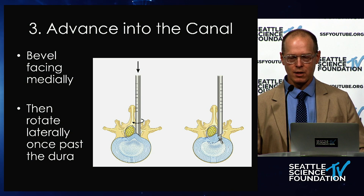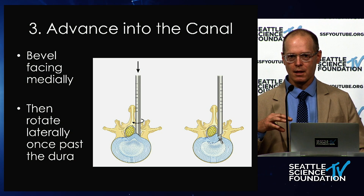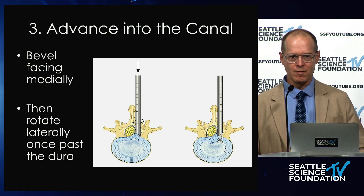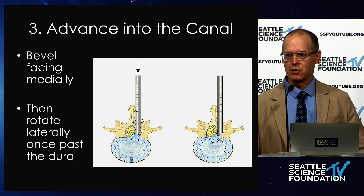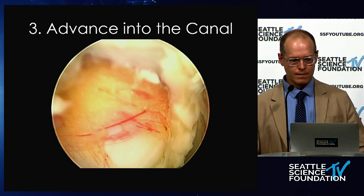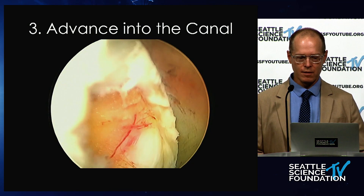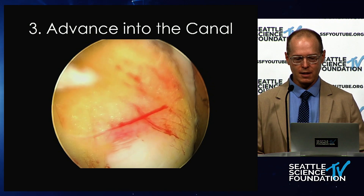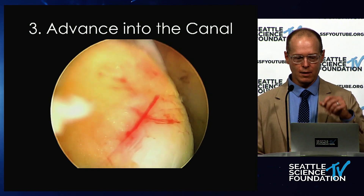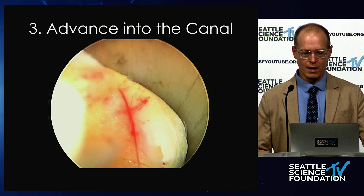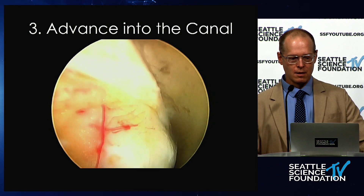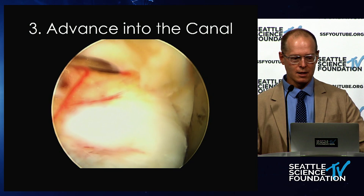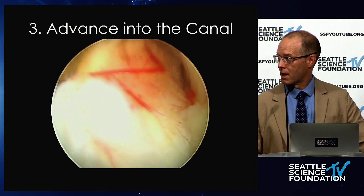As long as you're in a good lateral position, that will help you get into a good position when you enter the canal. Once you get into the canal, you're going to rotate the bevel to face laterally. What that does is the tip of the tubular retractor actually acts as a retractor to protect the traversing nerve root. Here you can see the ligamentum flavum around the edges of the video, and I'm gradually watching the tip of that working port advancing into the canal. This is a large disc herniation — the nerve is actually compressed and very thinned out.